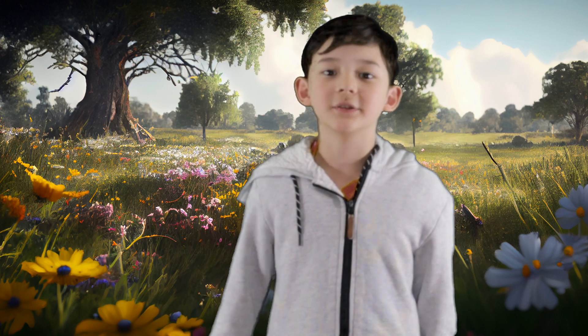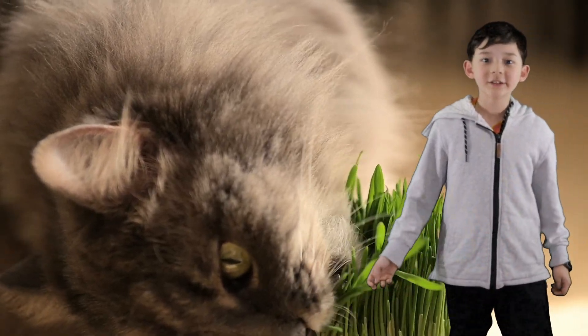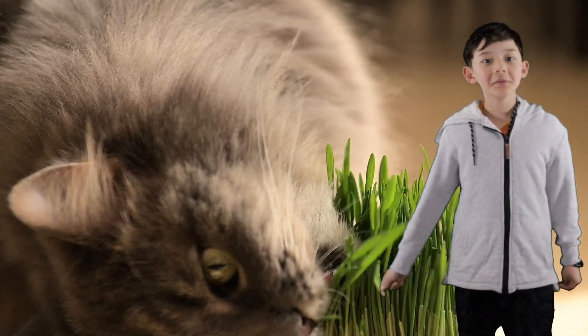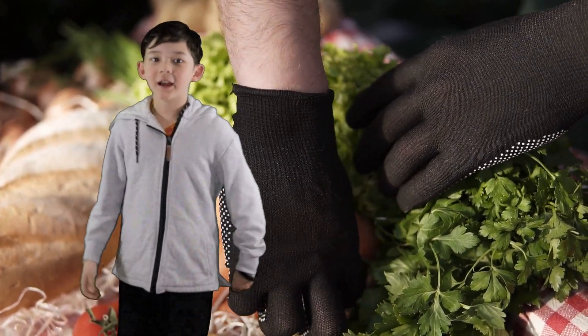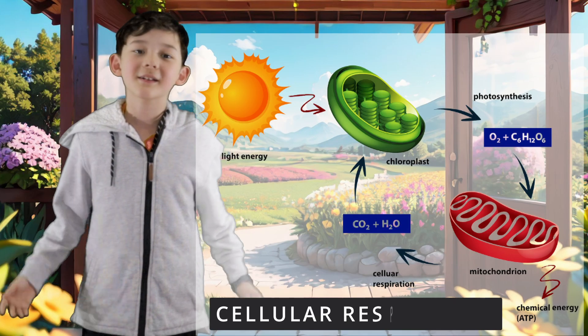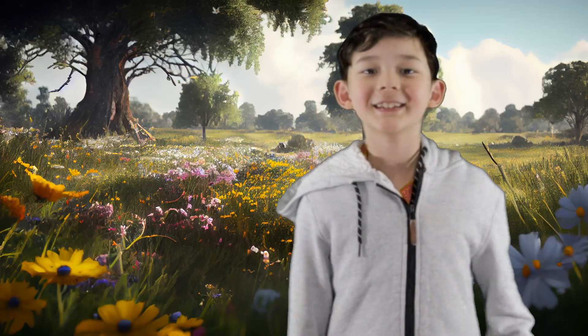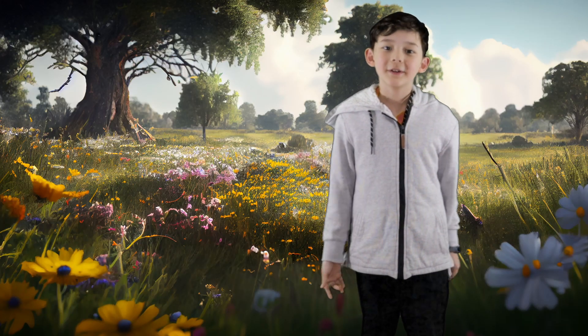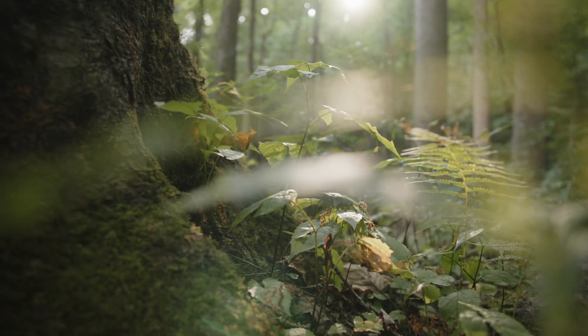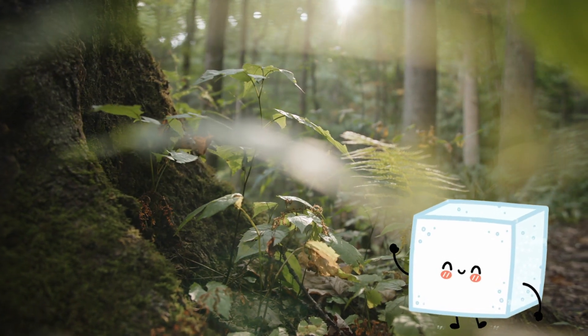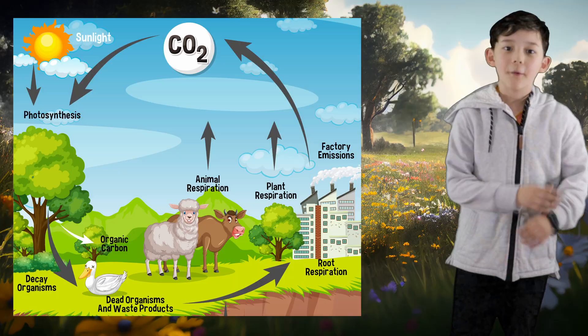Photosynthesis forms the foundation of life's circle. Plants produce glucose and oxygen, which animals and humans depend on for their energy and survival. When we eat plant-based food like fruits, vegetables, and grains, we consume the glucose produced by photosynthesis. Our bodies break down the glucose through a process called cellular respiration, releasing the energy that allows us to move, think, and do everything we do. In turn, we exhale carbon dioxide as a waste product, which is then used by plants in photosynthesis to create more glucose and release more oxygen, completing the cycle.